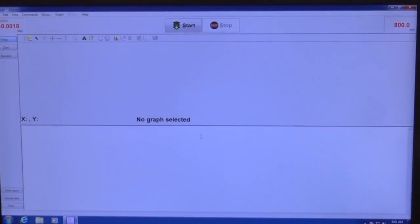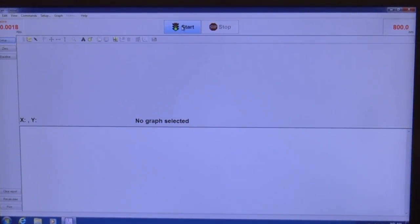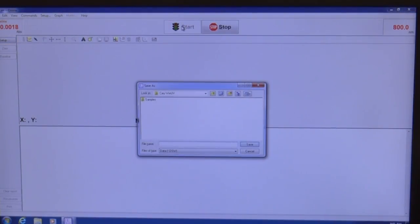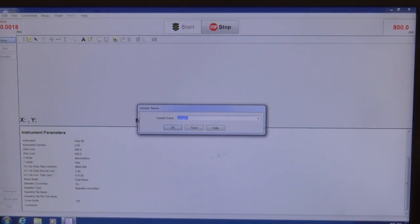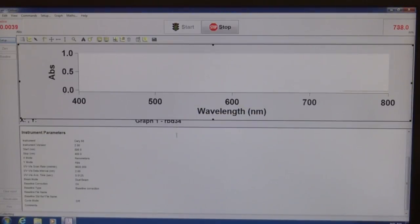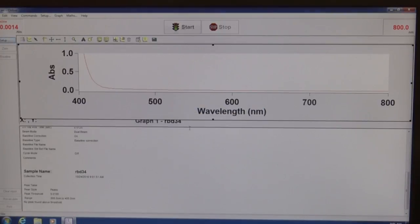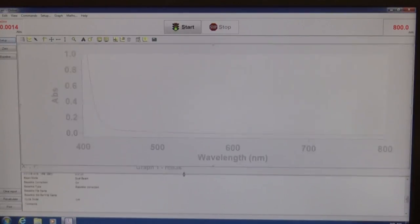Then we close the cover and go to the software, where we'll begin the experiment by clicking on the Start button. If you're the first student of the day, you'll be prompted to give a file name. This name will store all the data for the entire lab session, so be sure that you give it an appropriate name. Next, you'll be asked to label your sample with a name that you can identify as your own. After clicking OK, the experiment will begin, and you'll be able to watch your spectrum collect in real time.